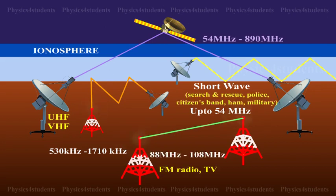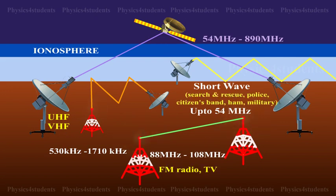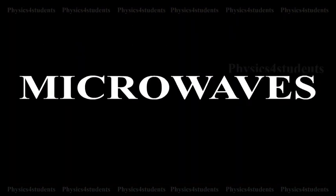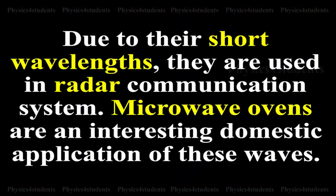Cellular phones use radio waves in ultra-high frequency, UHF band. Microwaves: Due to their short wavelengths, they are used in radar communication systems. Microwave ovens are an interesting domestic application of these waves.